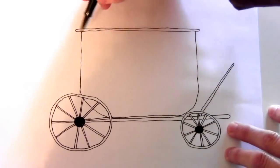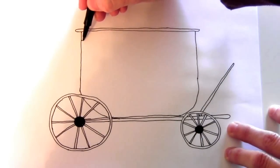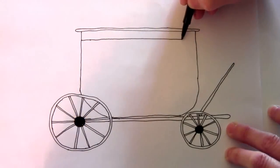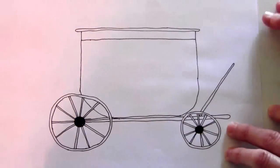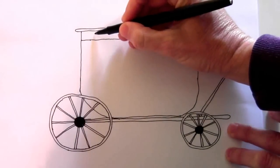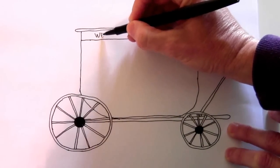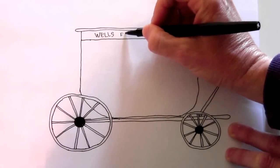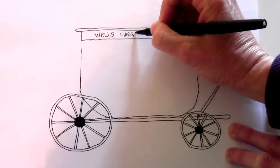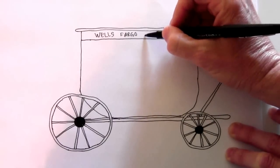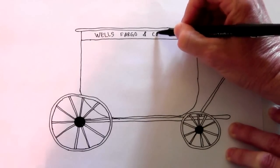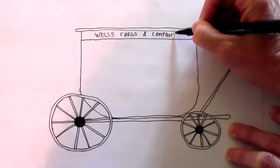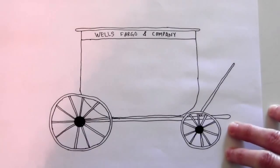Just below this, a little ways, draw a line that goes across. Don't make it too big. It just needs to be big enough to write Wells Fargo and Company.